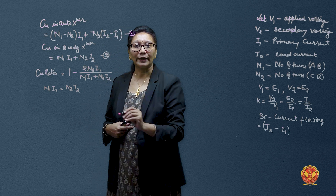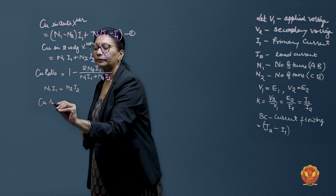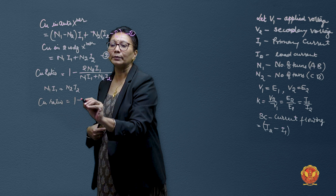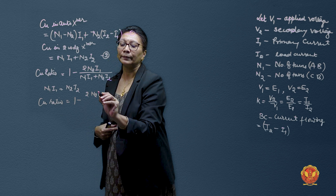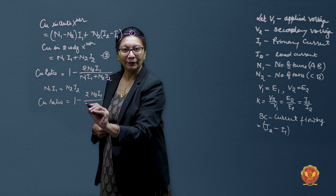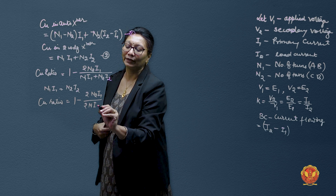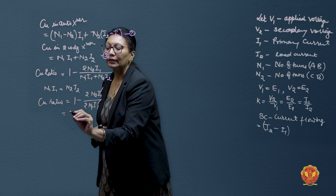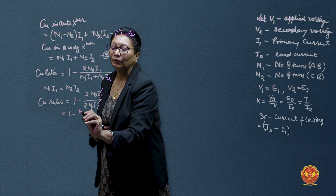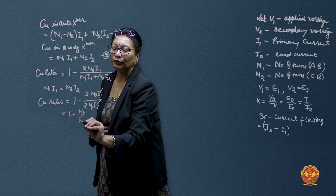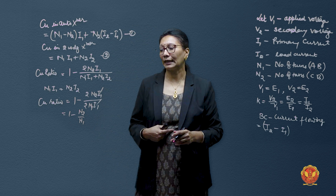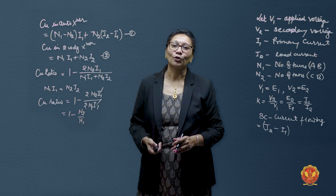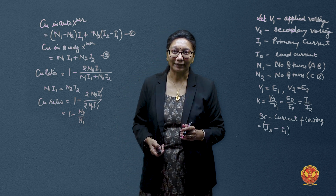Cancelling common terms, the ratio of copper required in an autotransformer compared to a two-winding transformer is: 1 minus N2/N1. Expressed as a percentage, this shows how much copper is saved in the case of an autotransformer in comparison to a two-winding transformer.